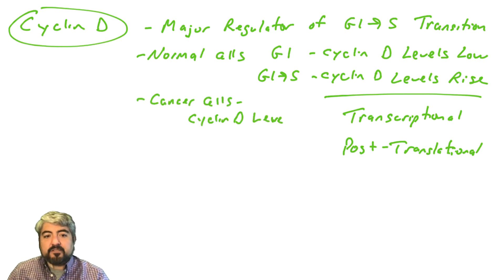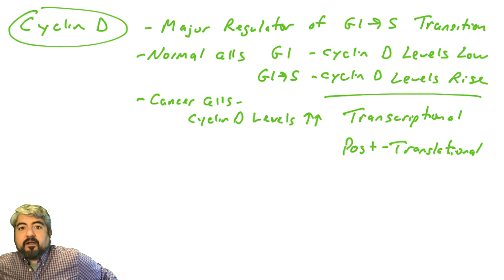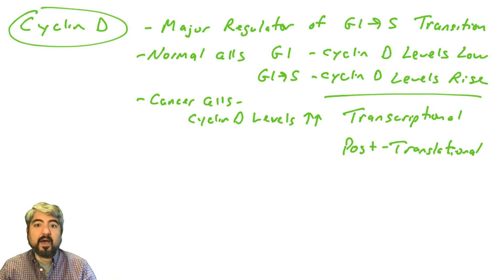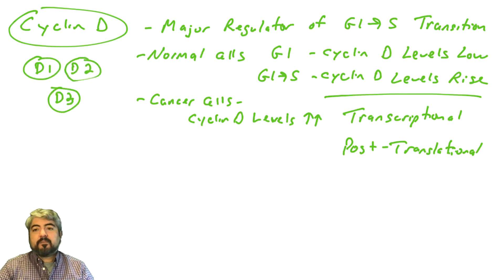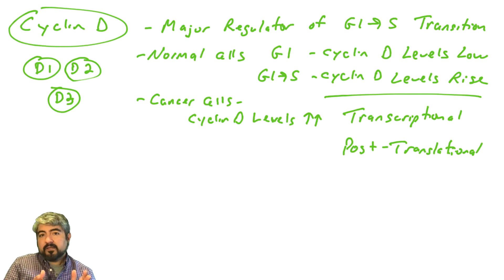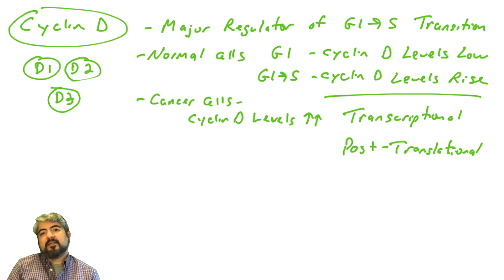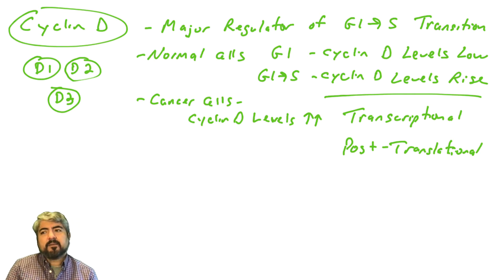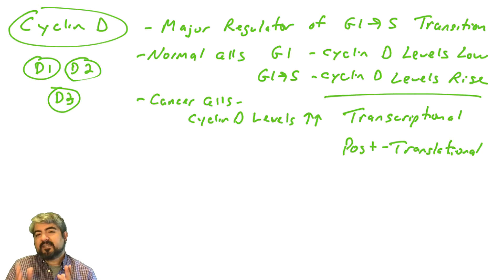In many human cancers, cyclin D levels are very high, and we'll see at the end of this video why they can be high. There's a family of cyclin D proteins: cyclin D1, cyclin D2, and cyclin D3. Cyclin D1 is the major regulator of G1 to S transition in many cells involved in cancers, like epithelial cells. So when I talk about cyclin D, I'm typically referring to cyclin D1.